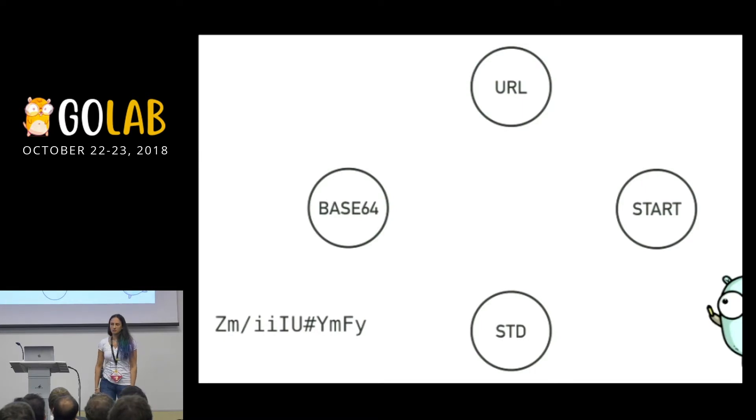We have the four main states. The start state, where we start the finite state machine and end up being every time we find an invalid character. The Base64 state, that's basically the alphanumeric state. And two variants - the URL variant or the standard variant. You can add as many states as you want for different variants. Just let's take this as an example to keep things easy.